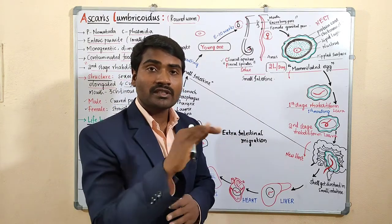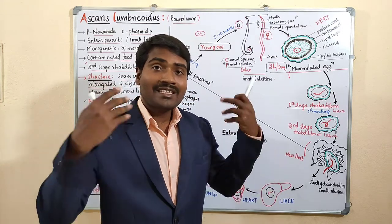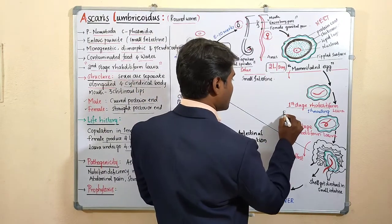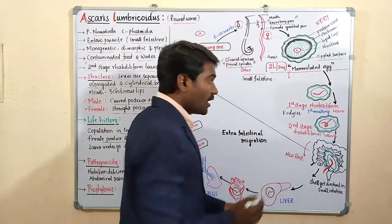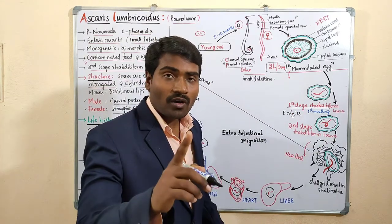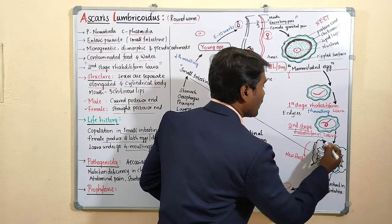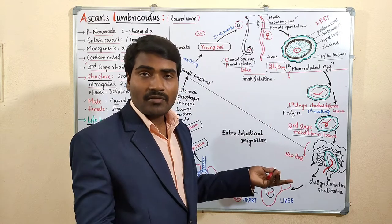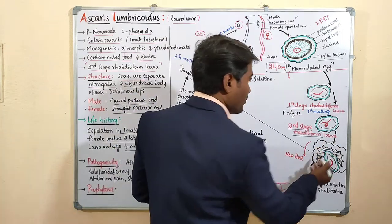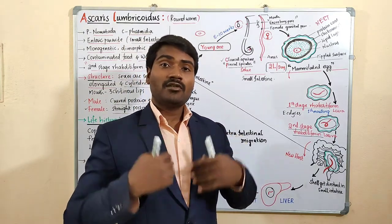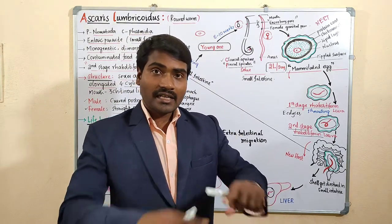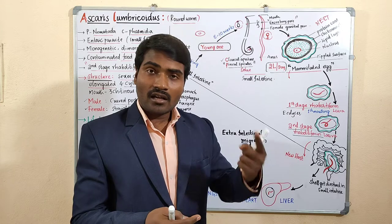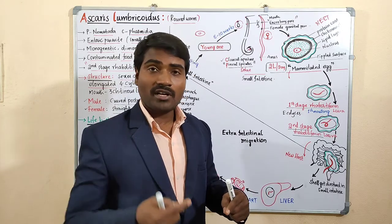The first-stage rhabditiform larva undergoes the first molting — molting means removing the outer sheath, like a snake shedding its skin — and becomes the second-stage rhabditiform larva. All these changes occur inside the egg in the moist soil.